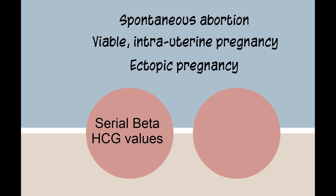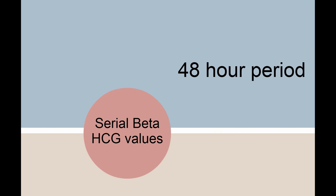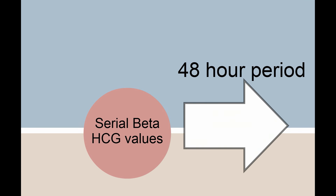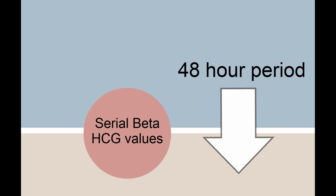Serial beta-HCG values and transvaginal ultrasound tests give us diagnostic information to help us make the diagnosis. Over a 48-hour period, the beta-HCG values should rise at least 50%. If the beta-HCG decreases over a 48-hour period, then the pregnancy is not a viable pregnancy — this could be a spontaneous abortion, or it could still be an ectopic pregnancy.